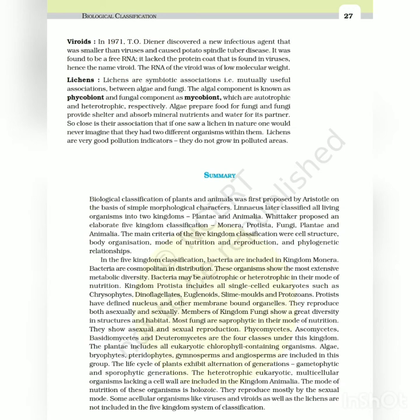Lichens - lichens are symbiotic associations, i.e., mutually useful associations, between algae and fungi. The algal component is known as phycobiont and fungal component as mycobiont, which are autotrophic and heterotrophic respectively. Algae prepare food for fungi, and fungi provide shelter and absorb mineral nutrients and water for its partner. So close is their association that if one saw a lichen in nature, one would never imagine that they had two different organisms within them. Lichens are very good pollution indicators - they do not grow in polluted areas.